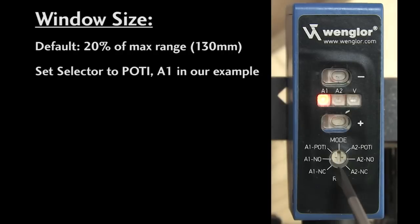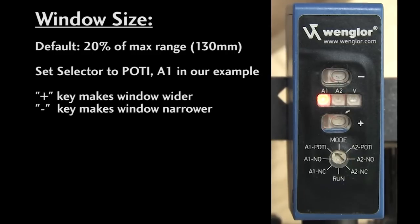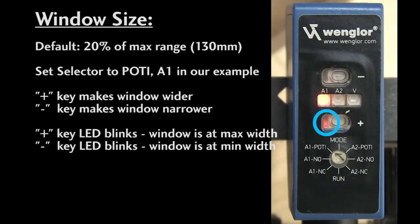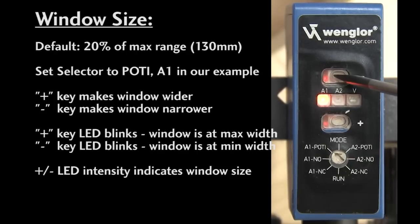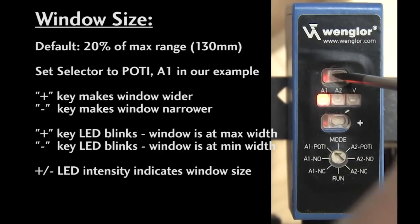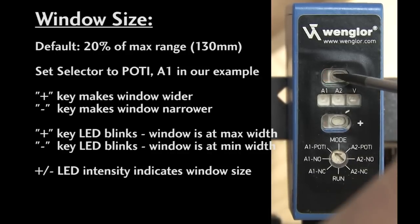Sure. Set the selector to the POTI for that output – A1 in our case. The plus key makes the window wider and the minus key makes it narrower. If either key blinks like this, then you've hit the upper or lower limit of the allowed window width. It's a little subtle, but if you look closely you can actually gauge where you are by watching the LEDs.